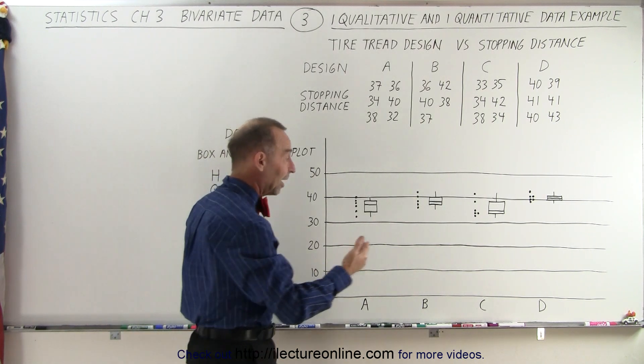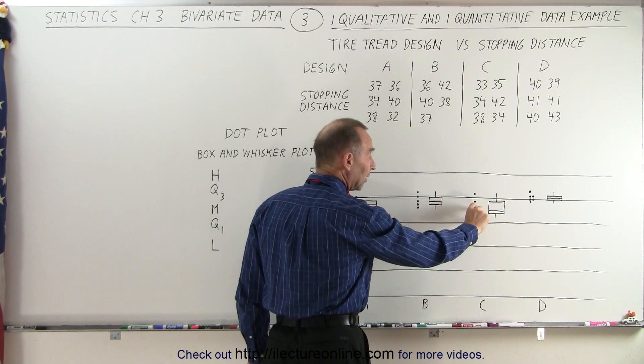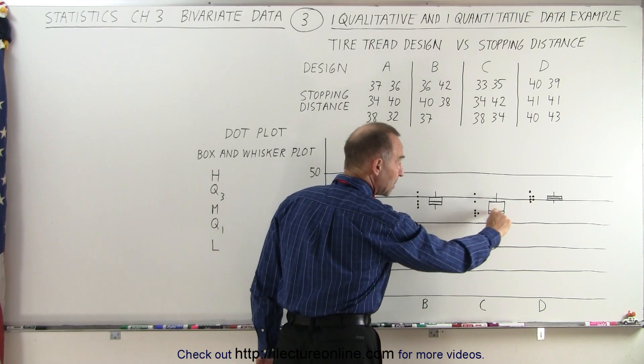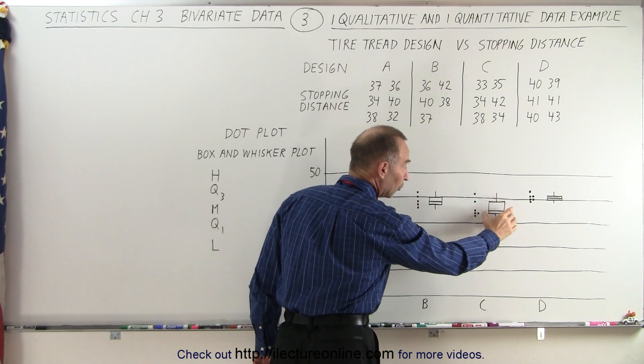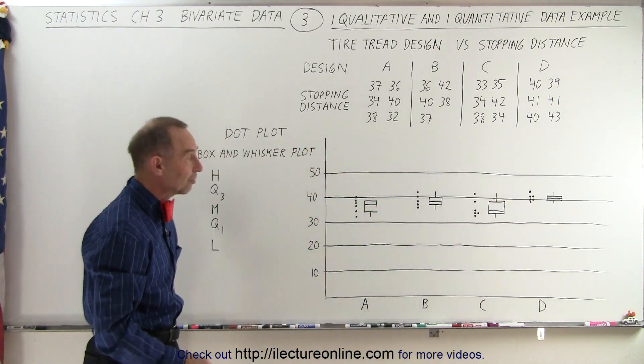So you can see that for tire type C, some cases you have a very large stopping distance and in many cases you have a very short stopping distance. That also means that the median line is very close to the first quartile and far away from the third quartile to give that indication as well.